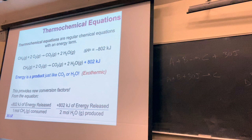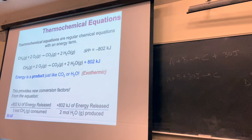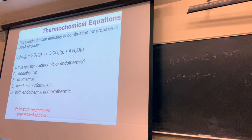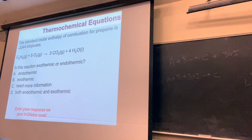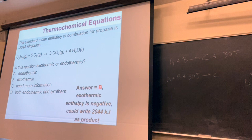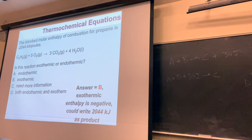It's an alternative way to write energy quantities. You can make relationships to convert one reaction to another. Here's an example: a combustion reaction where propane is being burned, with a standard molar enthalpy of combustion of negative 2044. Since the delta H is negative, this is exothermic. Alternatively, you could write 2044 as a product: propane plus 5 oxygens makes 3 CO2 plus 4 waters plus 2044 kilojoules.